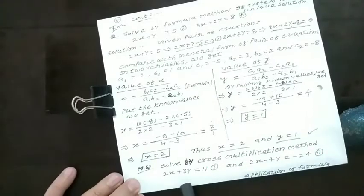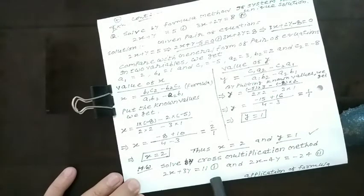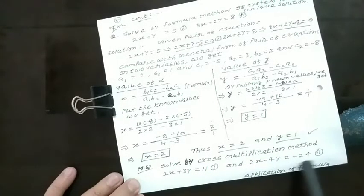Homework: solve by cross multiplication method. 2x plus 3y equals 11, and 2x minus 4y equals minus 24. Note that before application of the formula, we get a1 upon a2, b1 upon b2, and c1 upon c2.